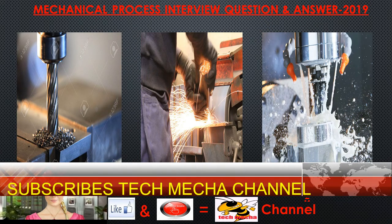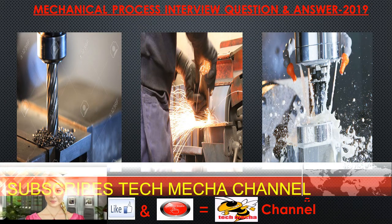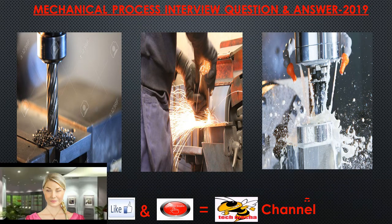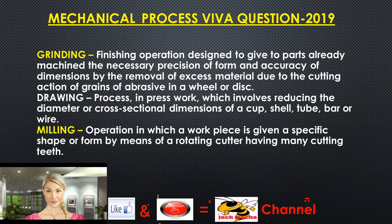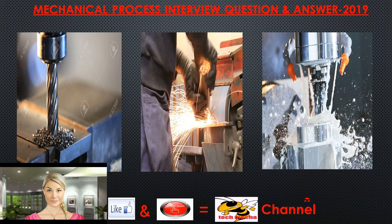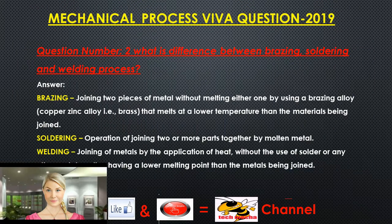Grinding involves the removal of excess material by the cutting action of grains of abrasive in a wheel or disc. Drawing process, in press work, involves reducing the diameter or cross-sectional dimensions of a cup, shell, tube, bar, or wire. Milling is an operation in which a workpiece is given a specific shape or form by means of a rotating cutter having many cutting teeth.